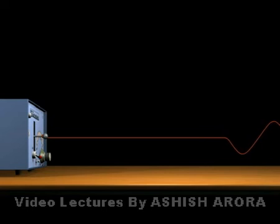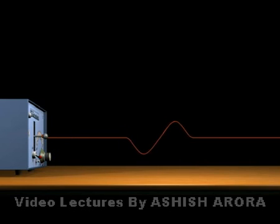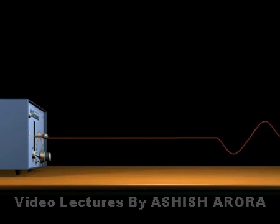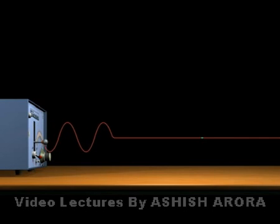Now we are going to discuss how the wave pulses form a continuous wave train. Here, if the oscillator continues to oscillate, we can see that for continuous oscillation, correspondingly a continuous wave train is produced. A wave train is nothing but waves generated one after another.